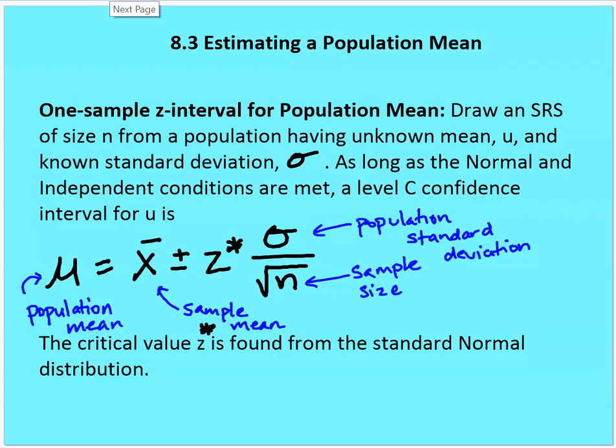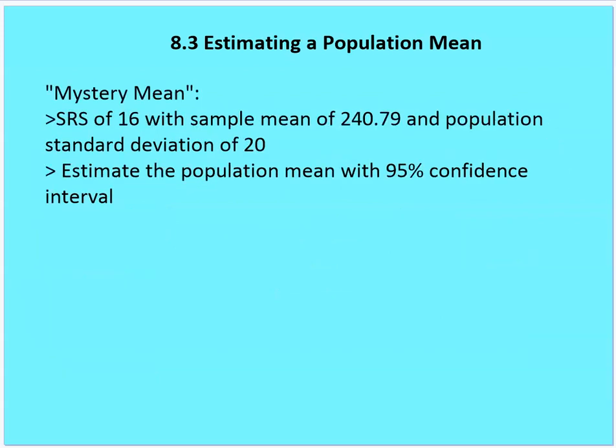So the formula is: population mean equals the sample mean plus or minus — this is the confidence interval — plus or minus the Z value multiplied by the population standard deviation divided by the square root of the sample size. Let's take an example.